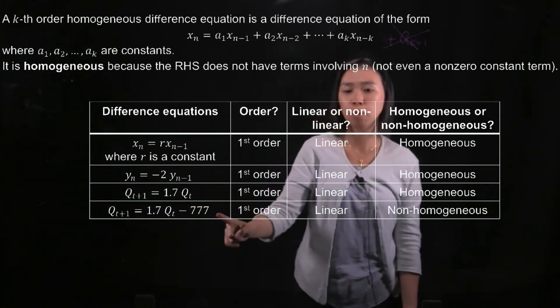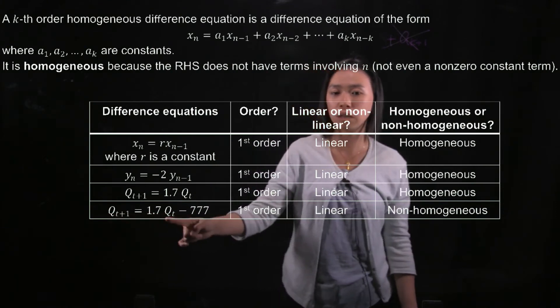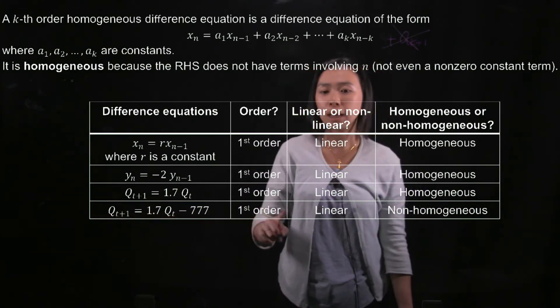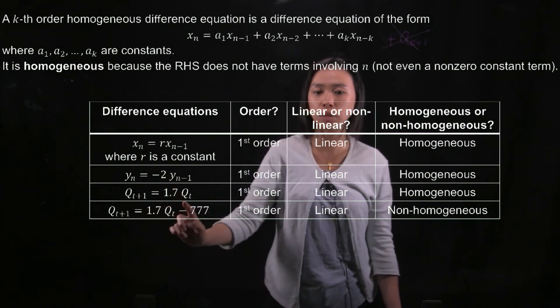While in the fourth example, you see that qt plus 1 depends on qt, so it's of the first order. It is linear because qt plus 1 and qt are of power 1.